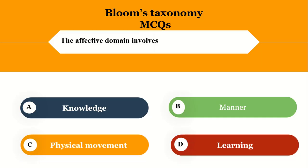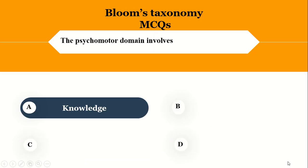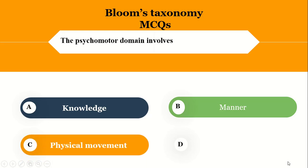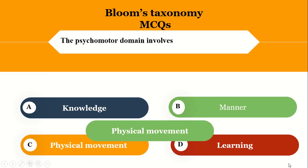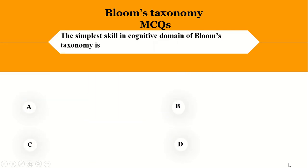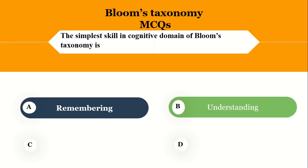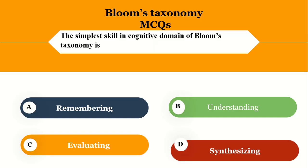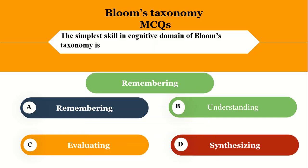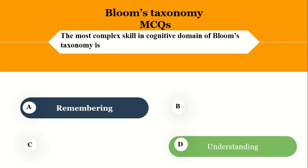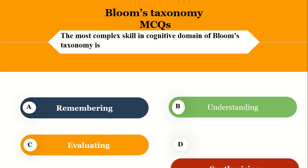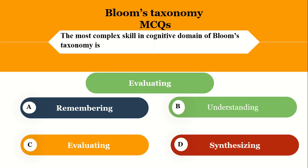The simplest skill in the cognitive domain of Bloom's taxonomy — is it remembering, understanding, evaluating, or synthesizing? The right option is remembering. The most complex skill in the cognitive domain of Bloom's taxonomy — is it remembering, understanding, evaluating, or synthesizing? The right option is evaluating.